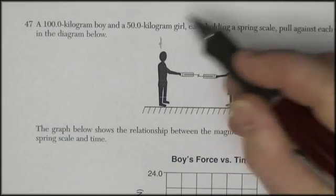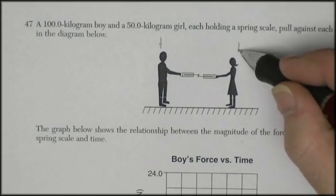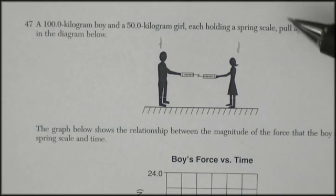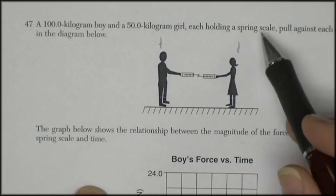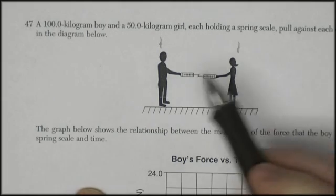A 100 kilogram boy and a 50 kilogram girl - they should reverse that one of these times, making the girl bigger than the boy. At any rate, they're each holding a spring scale pulling against each other as shown in the diagram.